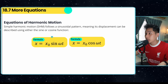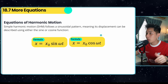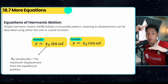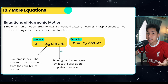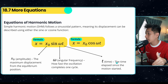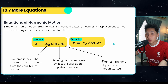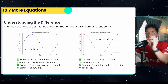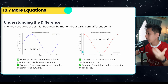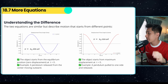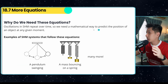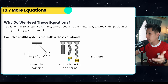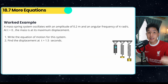In SHM you will learn two displacement formulas using the sine and cosine functions. x₀ is the maximum displacement (amplitude), ω is angular frequency, and t is the time elapsed since motion started. Use the sine equation if the object starts at the equilibrium position, and use the cosine equation if the object starts at maximum displacement. We need these equations to mathematically predict the position of an object — for example, a pendulum or bouncing mass — at any given moment.